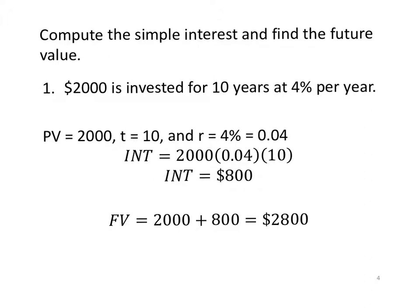So compute the simple interest and find the future value. $2,000 is invested for 10 years at 4% per year. So our present value is the $2,000 that is invested. T is 10 years. Interest rate, 4%. We always use a decimal in order to calculate values. The percentage is nice, but we use the decimal value in the math. The interest is PV times R times T. So $2,000 times .04 times 10. And you can do that mentally if you prefer, or you could just put it on the calculator, you get $800 of interest. So our future value is the $2,000 that we invested plus the $800 interest for a total of $2,800 future value as simple interest.